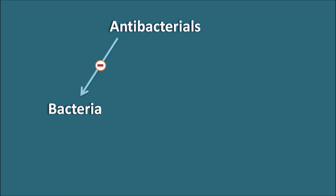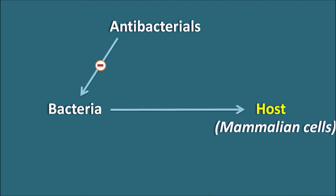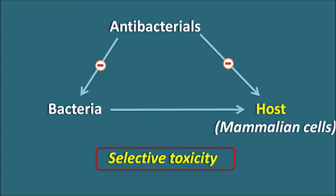But this bacteria is present within the host, that is the mammalian cells, so antibacterials can also produce some toxicity to the host. Therefore, we have to select the antibacterial such that they produce selective toxicity to the bacteria only, without producing any toxic reaction in the host. We have to observe differences between the bacteria and host so that we can target the bacteria specifically using the antibacterial agents.